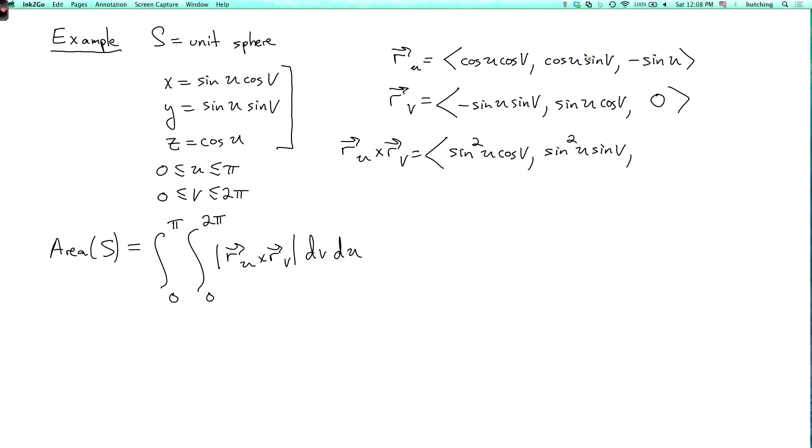And for the third term, I have this times this minus that times that. So I have cosine u times sine u times cosine squared v. Then I have plus cosine u sine u plus sine squared v. So I just get sine u times cosine u.